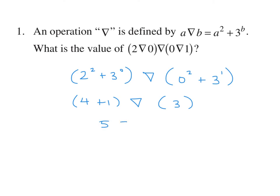So that's 5 symbol 3. Going back to that definition, we have 5 squared plus 3 to the power of 3, which is 25 plus 27. And that is 52.